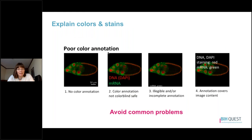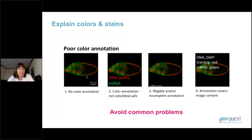It's important to explain your colors and stains. Some things to avoid: no color annotations at all with no information about what red and green represent; explaining specific markers but not the color used for a control stain such as DAPI in blue; colors defined but not colorblind safe; illegible or incomplete annotations with very small lettering and only one of two colors explained; or annotations that obstruct the image itself.